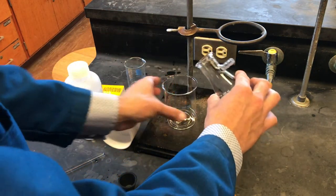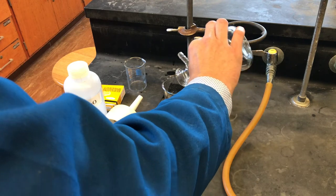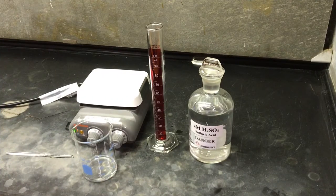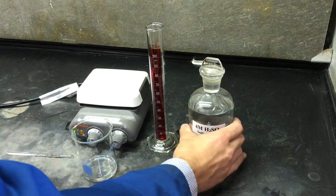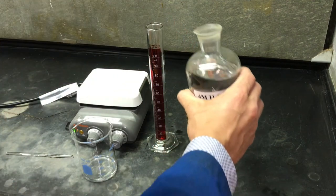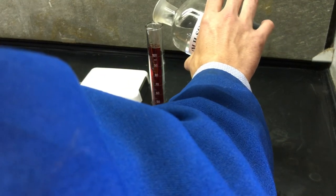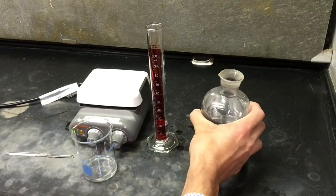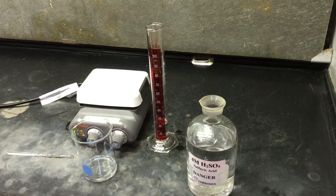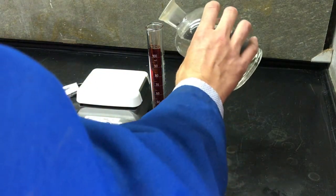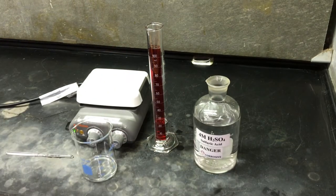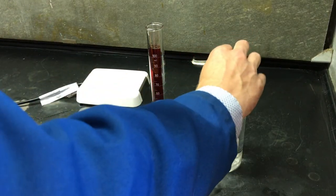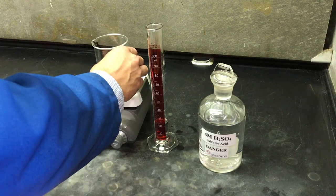We will now transfer our filtrate to a 250 ml beaker, which we will consider our reaction beaker. We will now react our filtrate in our reaction beaker with 4 molar sulfuric acid. Sulfuric acid is very corrosive and extreme care should be exercised. We will target 22.5 mL plus or minus 0.5 mL of H2SO4. We actually measure 23.0 mL of H2SO4 for our reaction.